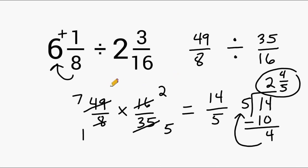Now if we would have used estimation at the beginning of this, we could have said that 6 and 1 eighth is kind of close to 6 and 2 and 3 sixteenths is kind of close to 2. So we could have done 6 divided by 2 as an estimate and understood that our answer should be pretty close to 3, and 2 and 4 fifths is just a shade under 3.